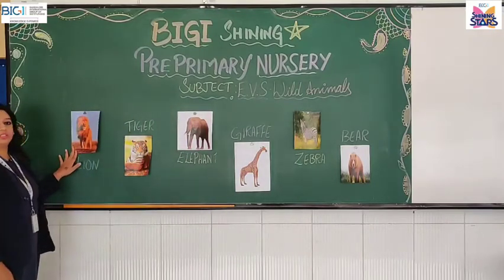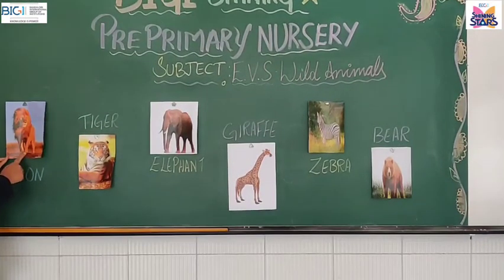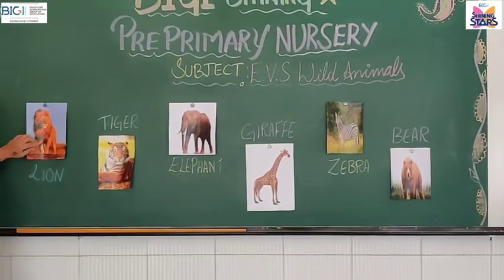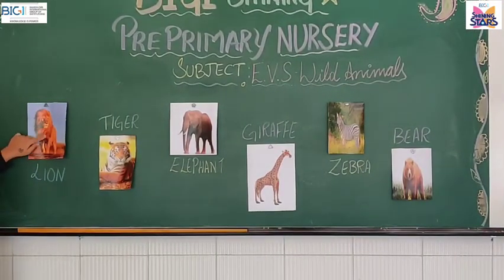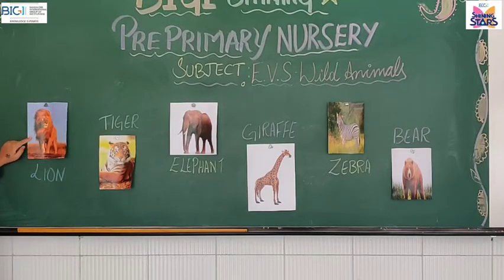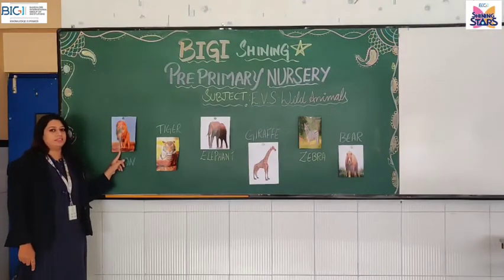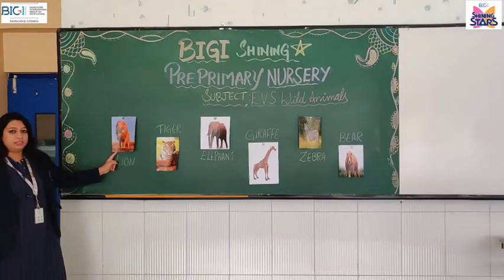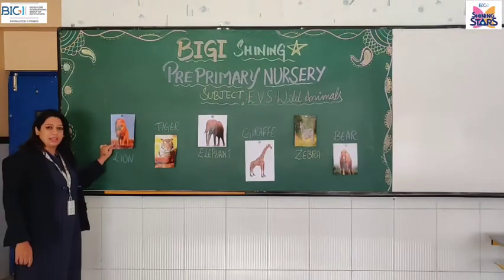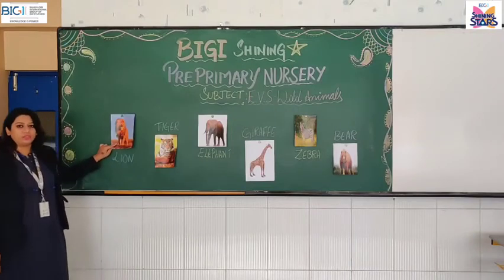Look at these, children. This is a lion. Lion is a wild animal. Can you see this hair around the face and the neck? This is called mane. A lion has a mane around its face and neck. Do you know? This lion is called the king of the jungle. All the other animals in the jungle listen to it. So, the lion is called the king of the jungle.